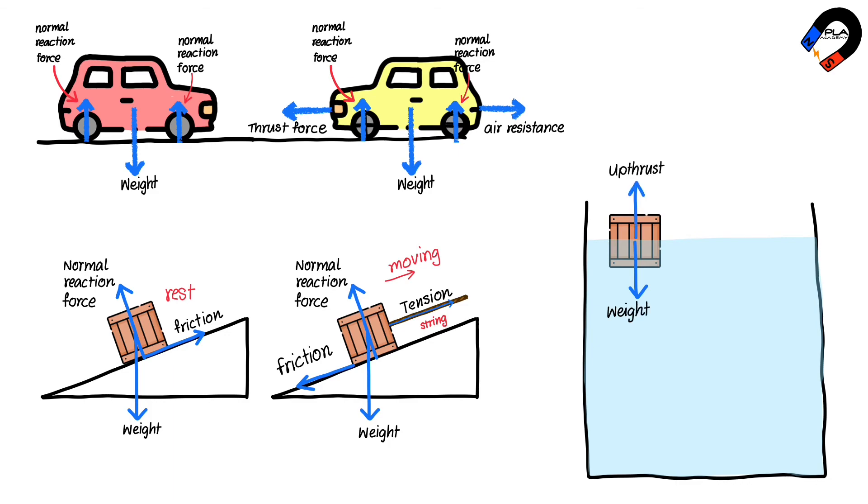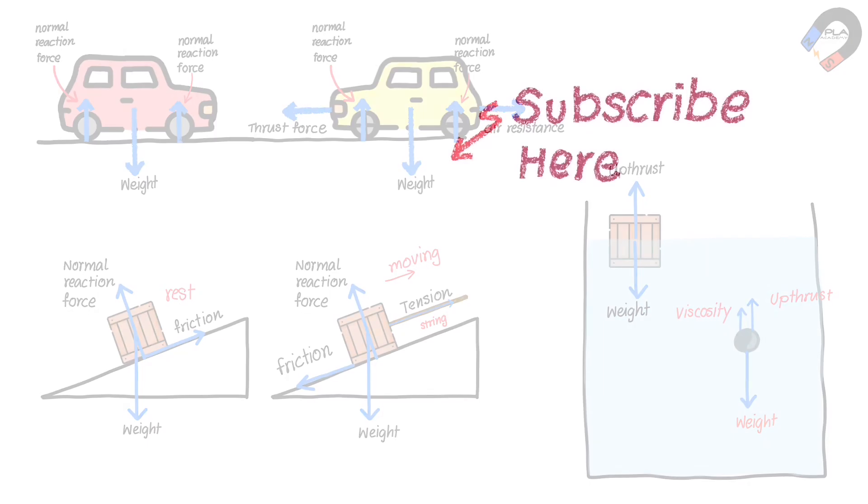When a box floats on the surface of the water, there is weight acting downward and upthrust acting upward. When a metal sphere is moving downward through the water, there is weight acting downward, upthrust acting upward, and viscosity or water resistance acting upward.